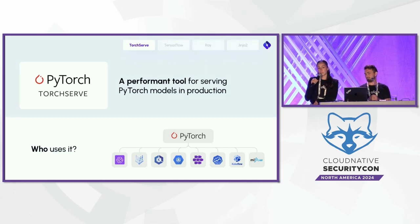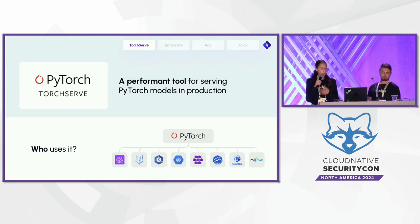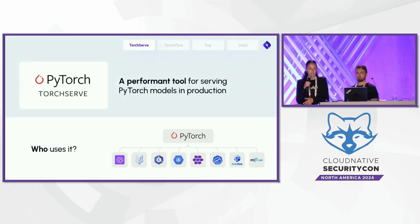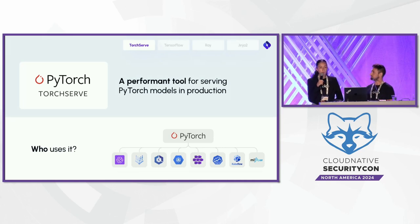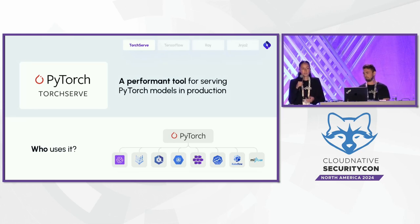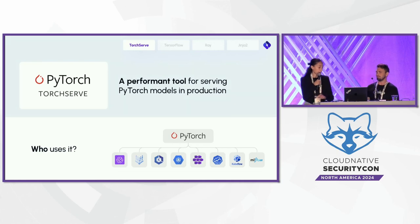I guess you know PyTorch TorchServe. If you worked with PyTorch models, it's a tool for allowing users to serve PyTorch models in production — it's the default and recommended way, listed on the official PyTorch site. It's very popular with over 1 million Docker pulls. Many leading companies and projects have adopted it, including AWS Neuron, MLflow, Kubeflow, and many more.